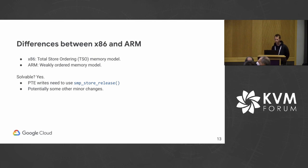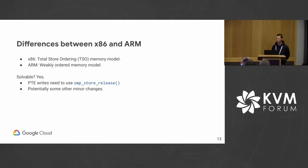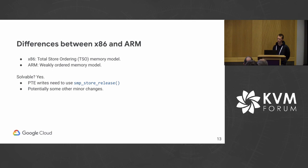The first difference is the memory model. x86 uses a total store ordering memory model, whereas ARM is weakly ordered. This is very solvable — it is just a software problem. PTE writes in the TDP MMU would need to use SMP store release instead of just write once, and there are probably some other minor changes to the low-level concurrency code in the TDP MMU that would need to use the appropriate barriers for ARM.